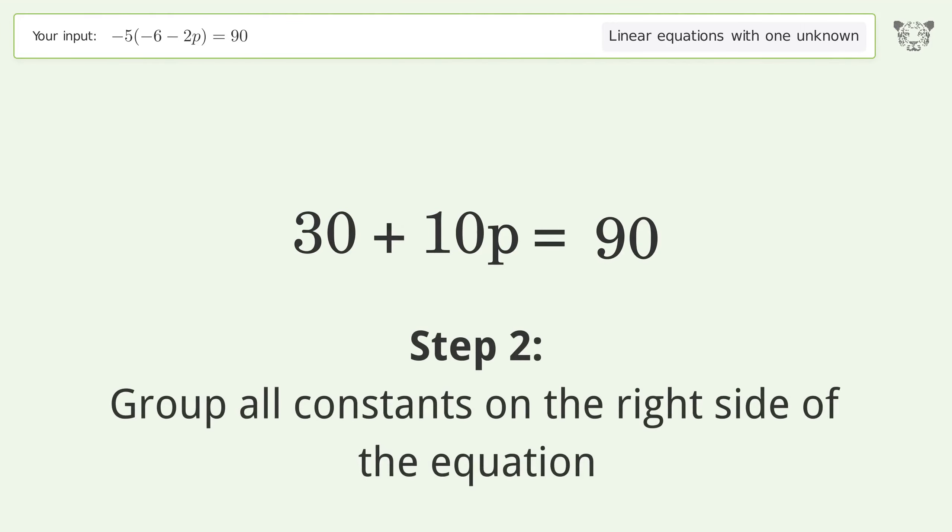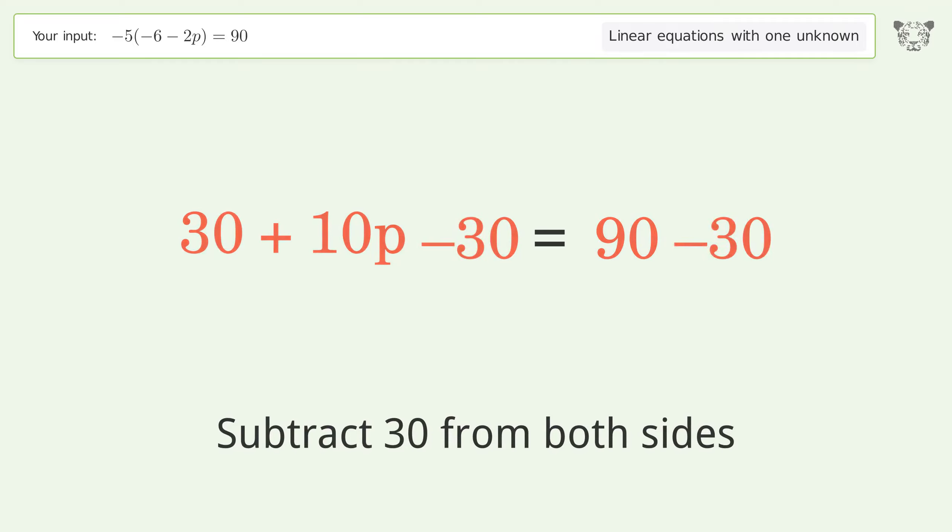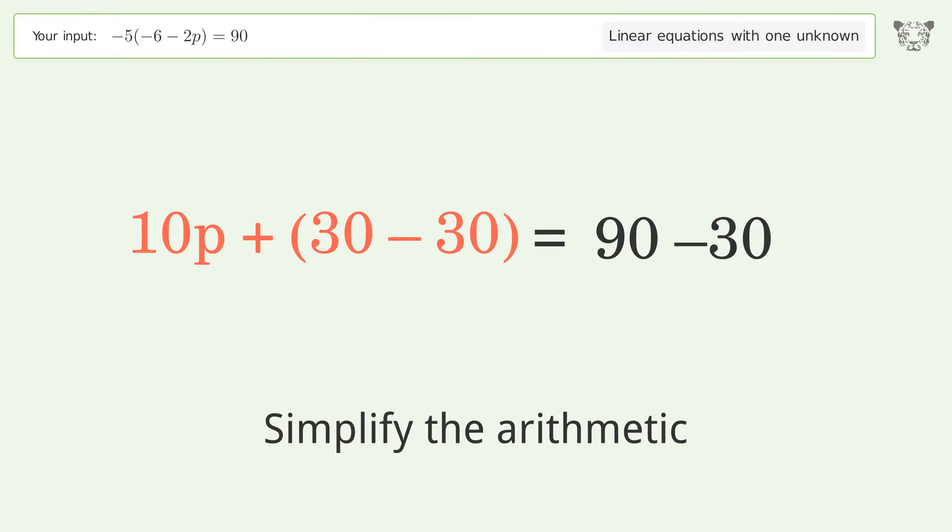Group all constants on the right side of the equation. Subtract 30 from both sides. Group like terms. Simplify the arithmetic.